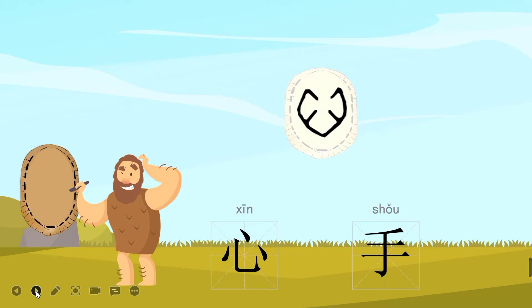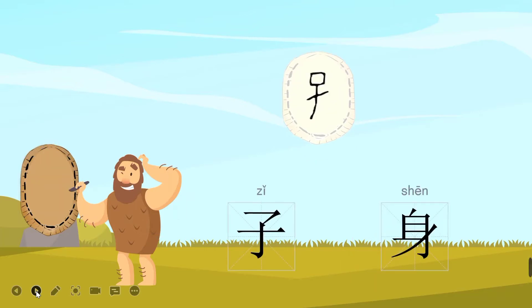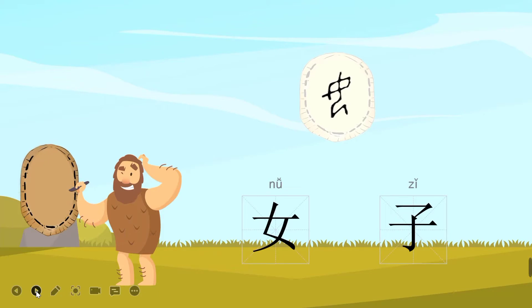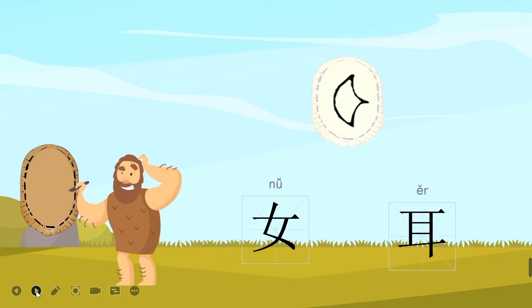Which one is it? Yes, xīn, heart. Yes, zǐ, child. Yes, méi, eyebrows. Yes, nǚ, female, woman. Yes, ěr, ear.